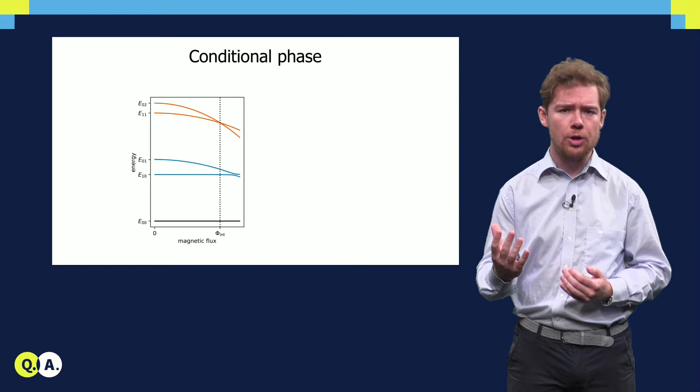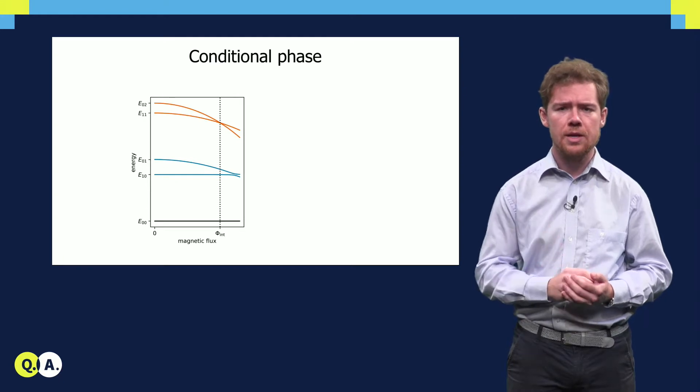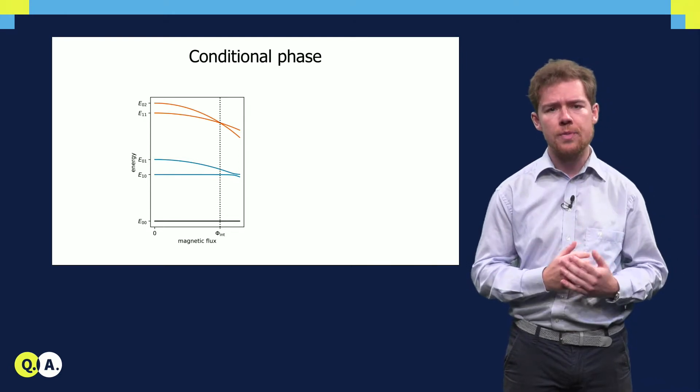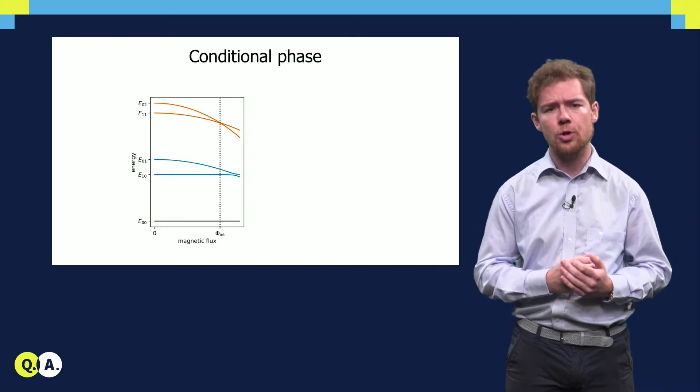To understand how this flux control can be used to perform a C-phase gate, let us take a look at the level diagram of two transmon qubits as a function of the flux through the target qubit.